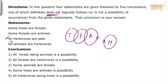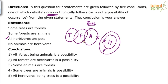Now come back to statement three which we had kept on hold. It says all herbivores are pets. Herbivores are already marked, so all herbivores go inside pets. Remember this is the basic diagram, so we ensure minimum overlapping between sets. Overall, the basic diagram shows: some trees are forests, some forests are animals, no animals are herbivores, all herbivores are pets.